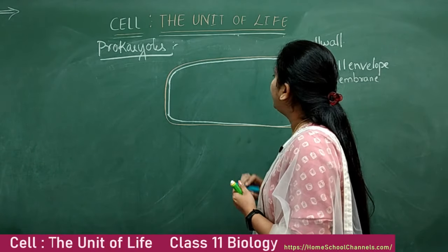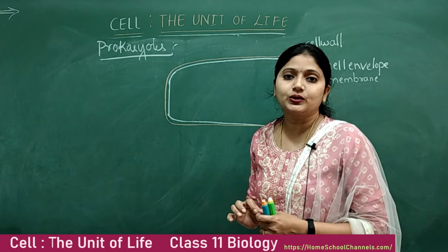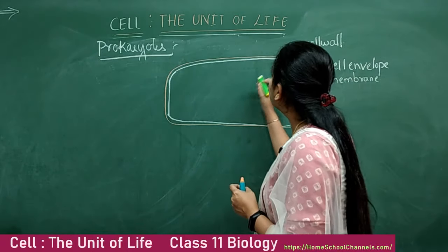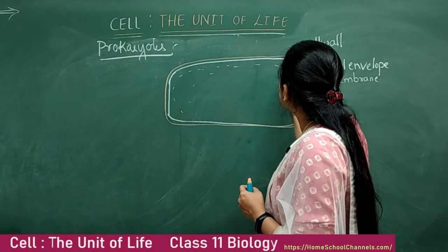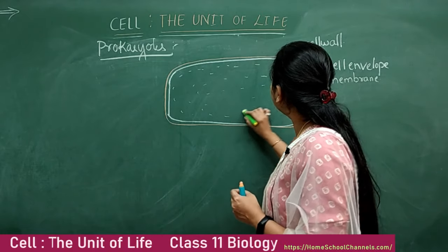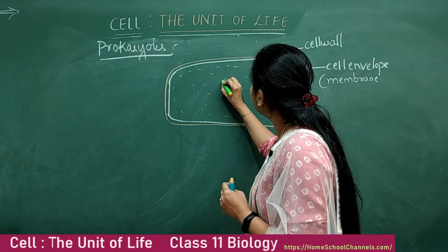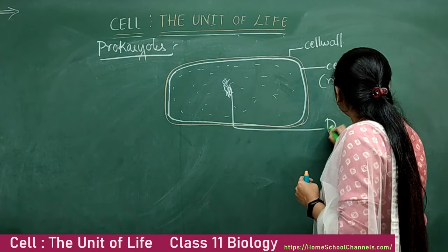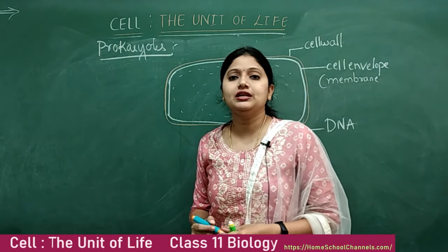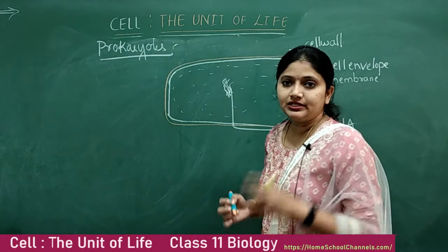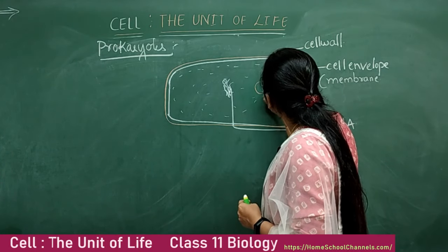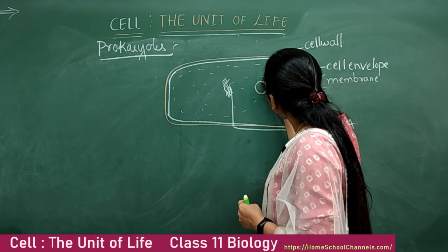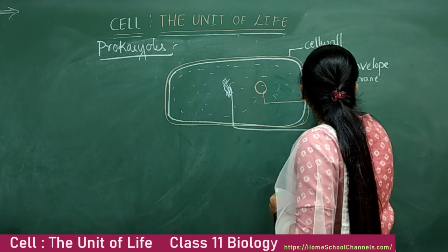Moving to the inner part: prokaryotes lack the nuclear membrane, so there is no nucleus. The genetic material is freely suspended in the cytoplasm, somewhere near the central position. Apart from this main DNA, in bacteria there is another circular DNA called the plasmid.